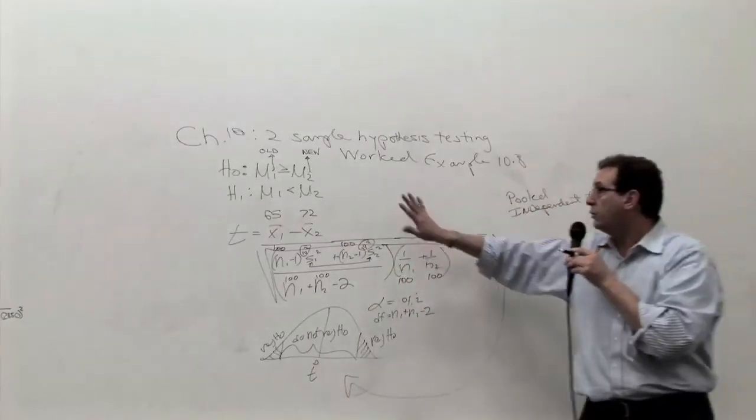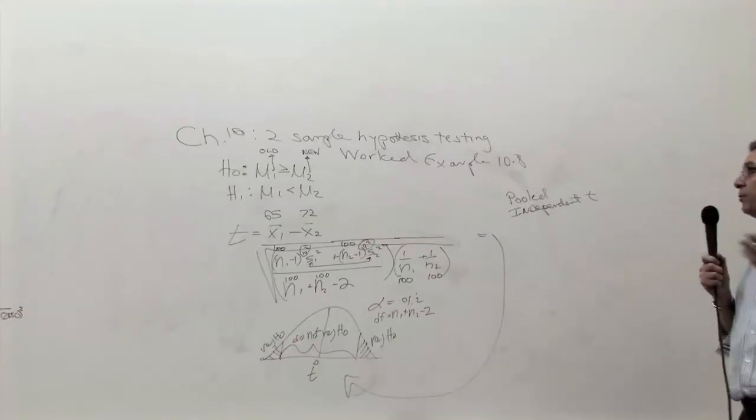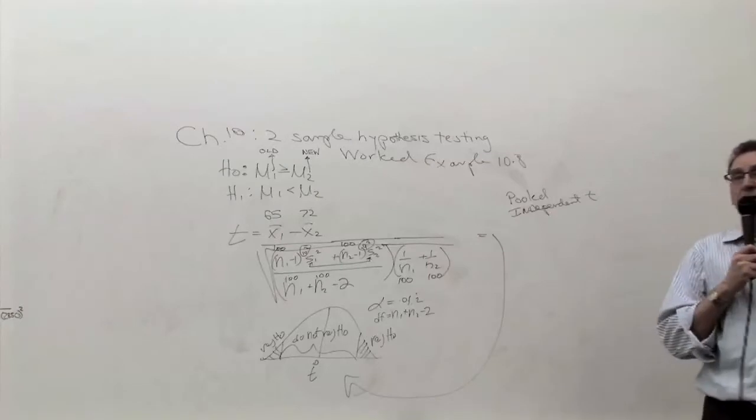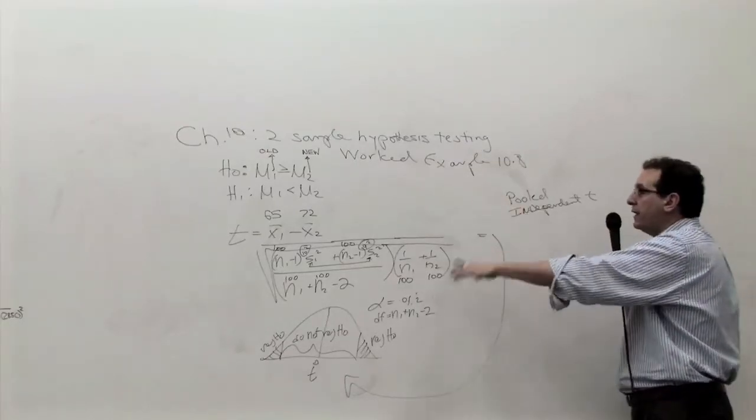And we're using T here because the sample standard deviation is given to us. There's also a Z version of the formula. But for the test, as far as I know, all you're responsible for is this single formula. At this point, anybody with the calculator can give you the answer. I'd like you to please do that right now. Let's finish this up.